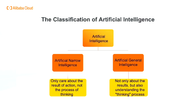A popular definition of artificial intelligence was proposed by McCarthy at the Dartmouth Conference in 1956, but this definition seems to ignore the possibility of strong artificial intelligence. The view of strong artificial intelligence holds that it is possible to create intelligent machines that can really reason and solve problems. In contrast, weak AI machines just look like intelligent ones, but don't really have intelligence or autonomous consciousness.